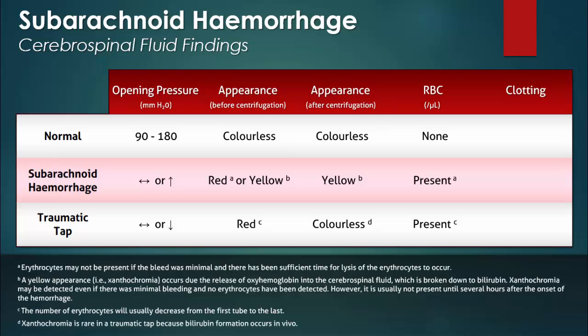Because bilirubin formation occurs in vivo, it usually will not be present in the cerebrospinal fluid collected from a traumatic tap. It must be remembered, however, that because bilirubin takes hours to form, xanthochromia will not be detected for the first few hours following the onset of a subarachnoid hemorrhage.